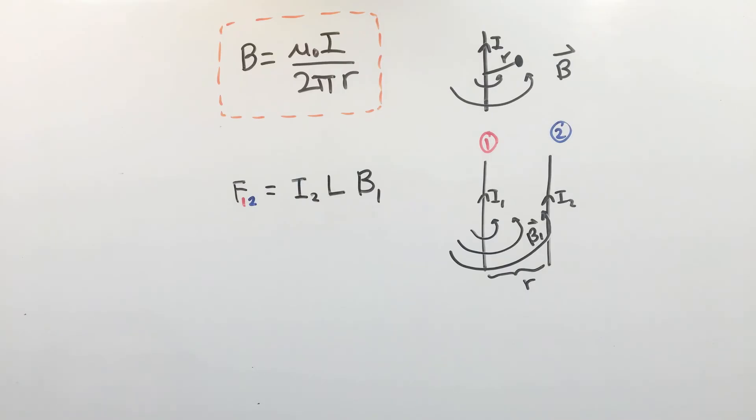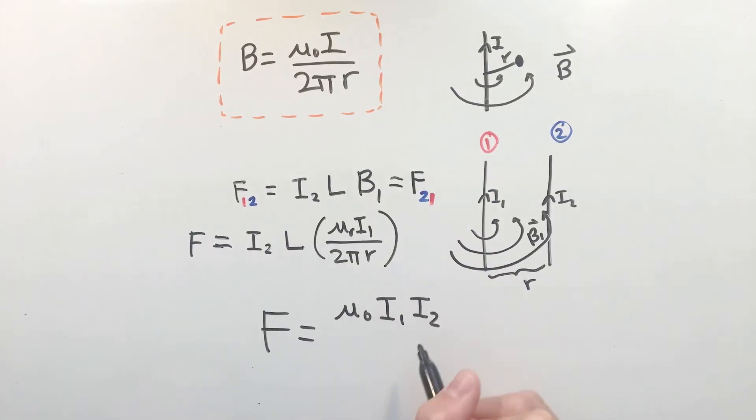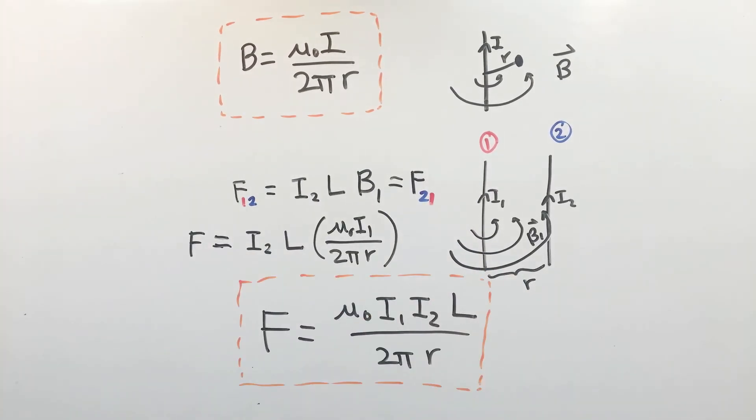Applying this equation with the F equals ILB equation, we can find an equation for the interaction force between two current carrying wires. Applying the right-hand rule, we can also notice that currents running parallel in the same direction create an attraction force, while currents running in opposite directions create repulsion forces.